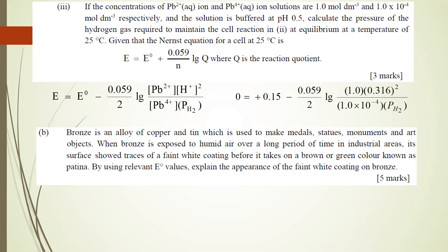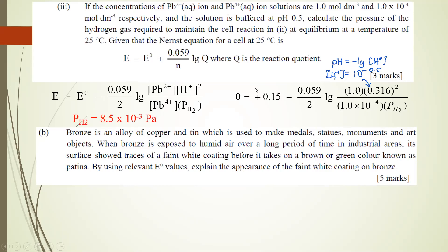Substituting everything: 0 = 1.69 − (0.059/2) × log([1.0 × (0.316)²] / [1.0 × 10⁻⁴ × P(H₂)]). The 0.316 comes from pH = −log[H⁺], so [H⁺] = 10^−0.5 = 0.316 mol/dm³. Solving for the partial pressure of hydrogen gas gives 8.5 × 10⁻³ Pa. That is how you solve question 4a(3).